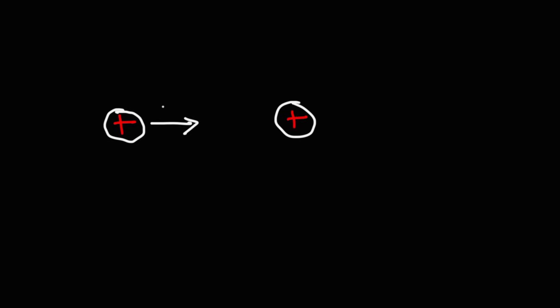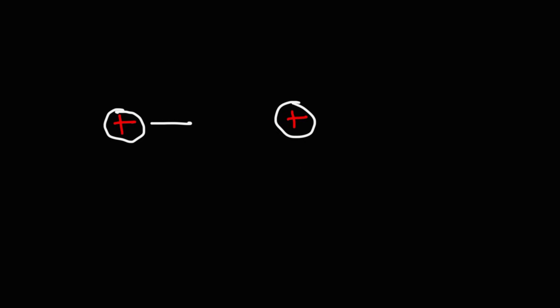Now let's draw the electric field lines for two positive point charges close to each other. The electric field vectors point away from each positive charge, so because they're both pointing away from each other, the electric field will cancel in the middle — it's going to be zero. The electric field vectors bend away from the two positive charges.